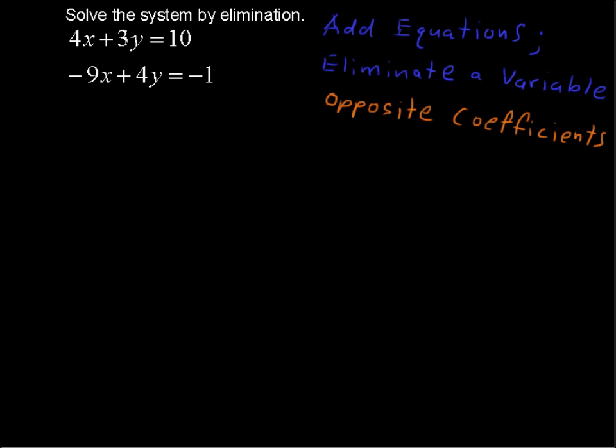So you may have to multiply. Sometimes they're already set up. This one is already set up. The x plus y equals some constant, and you want them to both be set up in that order so that you can add straight down. And some of them are already set up so that you can just add and one of the variables will drop out. But this one is not set up like that. So opposite coefficients, let me just put right here: one is positive and one is negative.